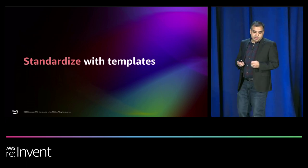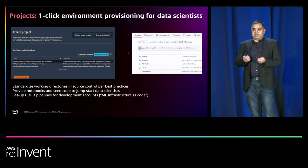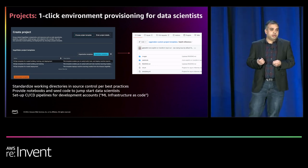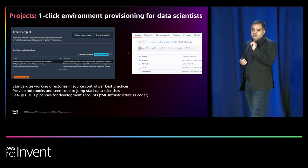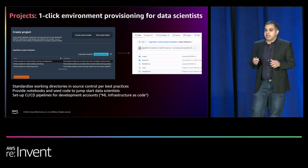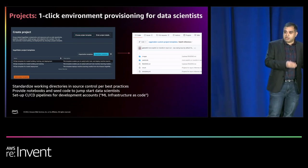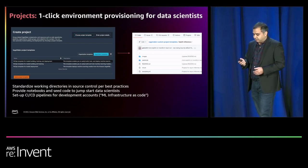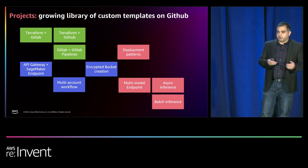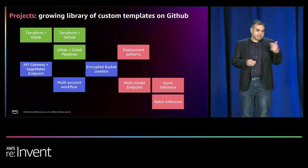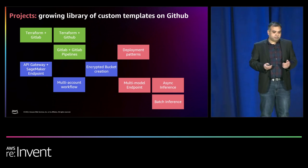An important use case for our customers, and oftentimes this is where they start, is standardizing the resource creation process through templates. Customers create templates exposed to their data scientists via SageMaker Projects inside Studio. When a template is executed, it can create GitHub repos in the background, pipelines, sample notebooks, model registries — everything a data scientist needs to get started. This massively reduces overhead both for admins onboarding new projects and for the data scientists themselves. We have a growing list of templates on GitHub covering use cases from GitHub repos via Terraform to provisioning encrypted AWS infrastructure for multi-account workflows.